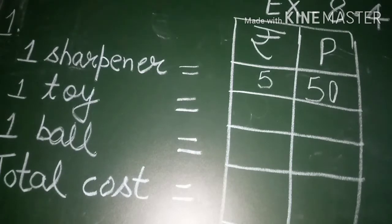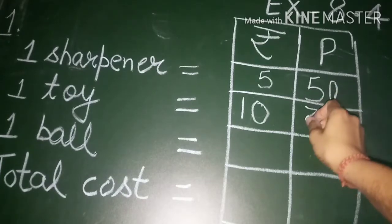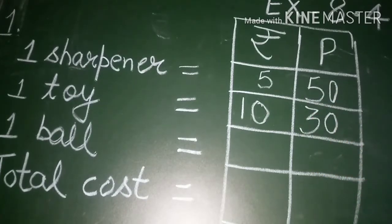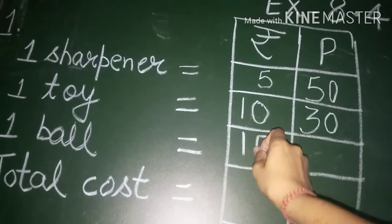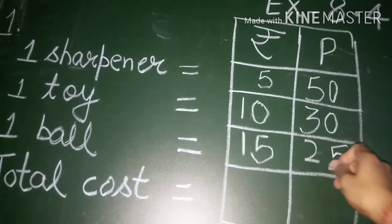Next is toy. The cost of a toy is 10 rupees and 30 paise. So, rupees here and paise under the column of paise. Next we have ball. Just look in your book and tell me the cost of a ball. Good. The cost of a ball is rupees 15 and 25 paise. So, again we will write it 15 rupees and 25 paise.